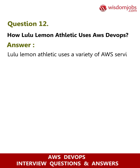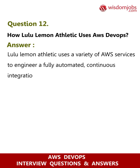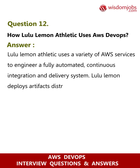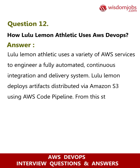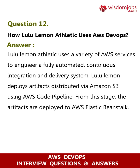Question 12: How does Lululemon Athletica use AWS DevOps? Answer: Lululemon Athletica uses a variety of AWS services to engineer a fully automated continuous integration and delivery system. Lululemon deploys artifacts distributed via Amazon S3 using AWS CodePipeline, from which the artifacts are then deployed to AWS Elastic Beanstalk.